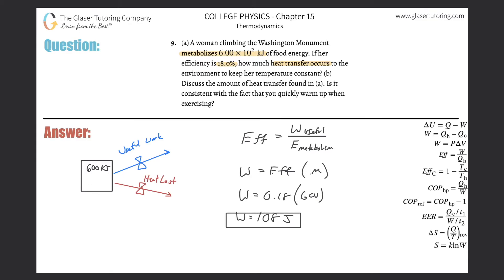18% of 600 is approximately 108 kilojoules. This is the amount of useful work. So in 600 kilojoules of energy being converted from food energy, 108 kilojoules is being used to do useful work, and some energy is being lost to maintain your body temperature.